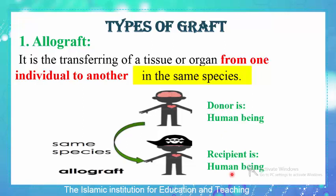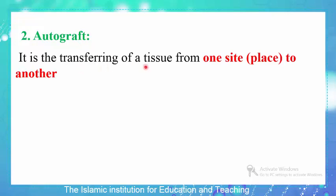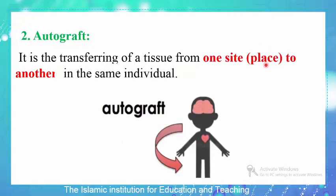The second type of graft is the autograft. In this type, there is a transferring of tissue from one place to another in the same individual. For example, if there is a skin burn on the face, the person receives skin from another place in their own body, such as the leg. A piece of skin is taken from the leg and placed on the face. Note that in this type, we talk only about the transferring of tissue — there is no transferring of an organ — simply because it occurs within the same individual.